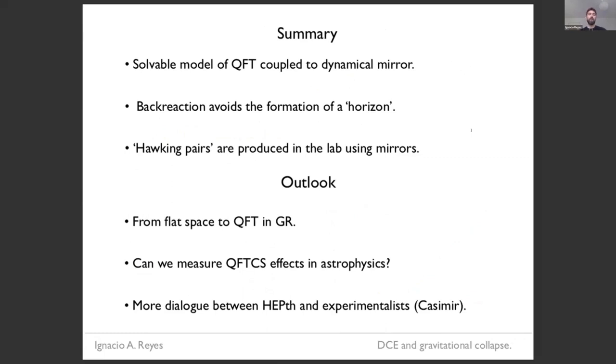Okay. So to wrap up, I told you about a solvable model where you can take a CFT and couple it to a dynamical mirror. The back reaction, at least in some cases seems to avoid what we could call the formation of a horizon. And also that there are something like Hawking pairs being produced actually in the lab. So as an outlook, of course, we would like to take our idea, some of these ideas from flat space time into curved space time. Another question is whether any of these effects are measurable in the astrophysics context. Of course we've heard more about this in this workshop. And I think more generally speaking, we need more interaction between the high energy theory people and experimentalists, for example, working on the Casimir effect. So that's it. Thank you very much.